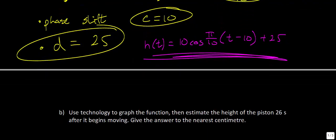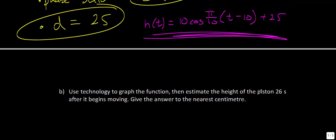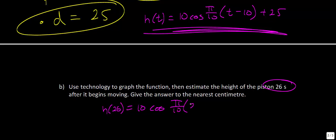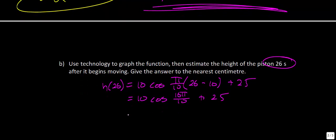The question asks us to estimate the piston height at t = 26 seconds. We substitute into our function: h(26) = 10 cos(π/10 · (26 − 10)) + 25 = 10 cos(16π/10) + 25. Make sure your calculator is in radians. This gives approximately 28 centimeters. Let's go over to Desmos to graph this function and confirm our answer.